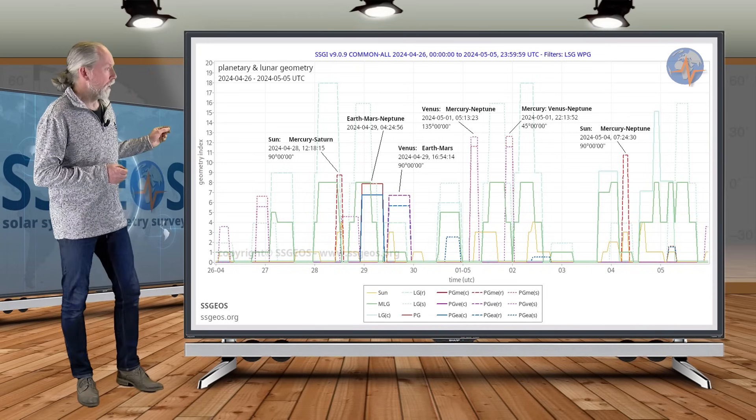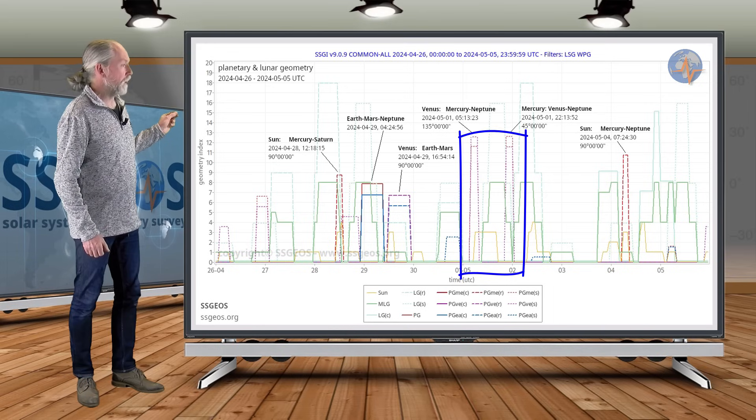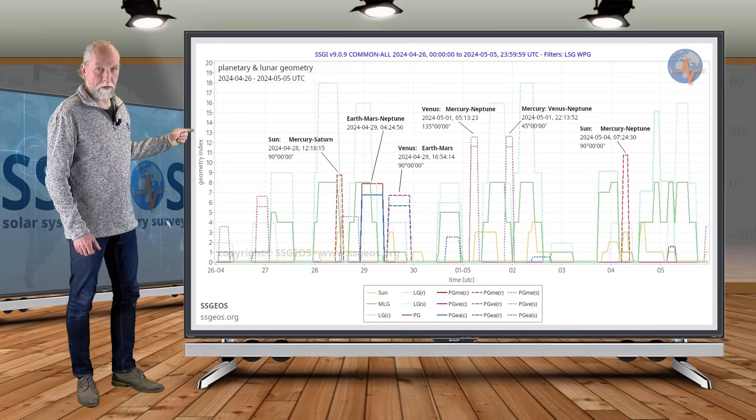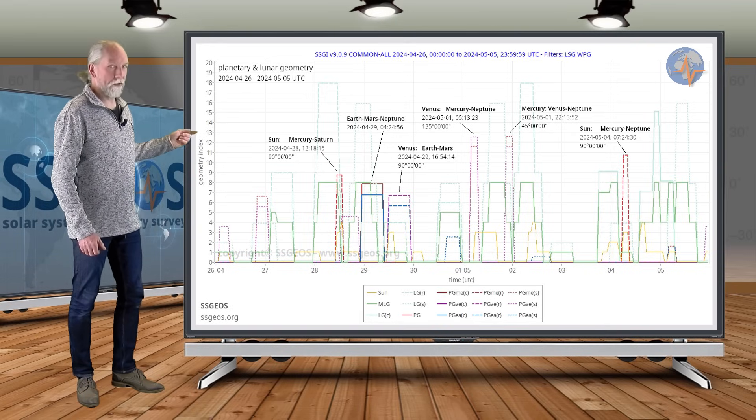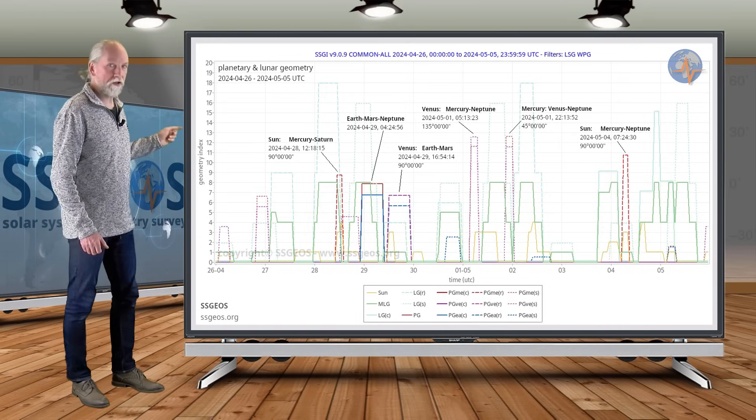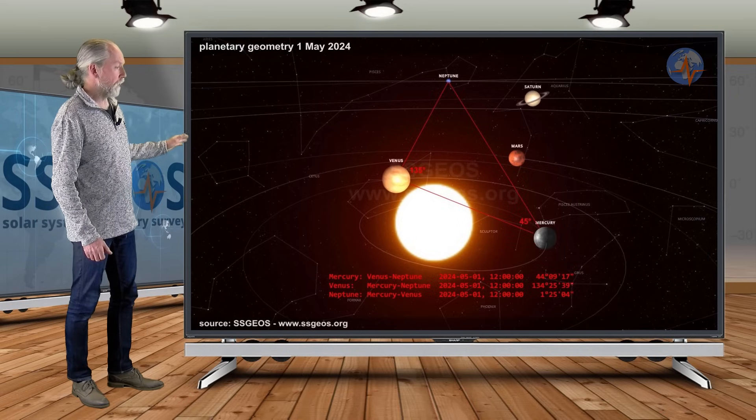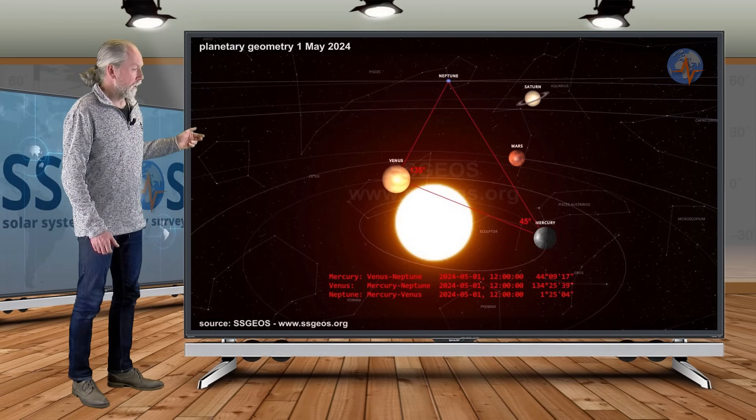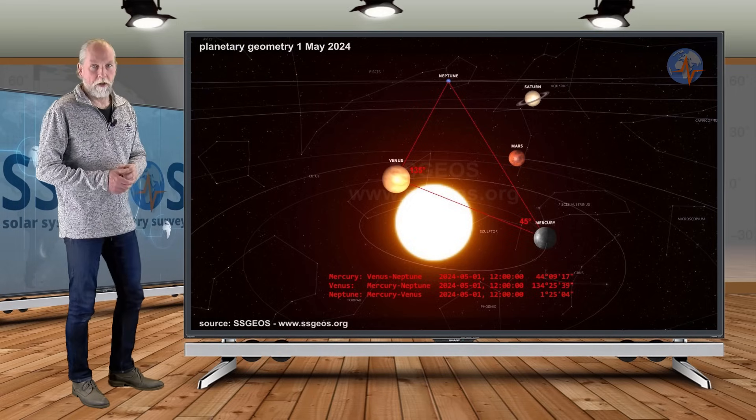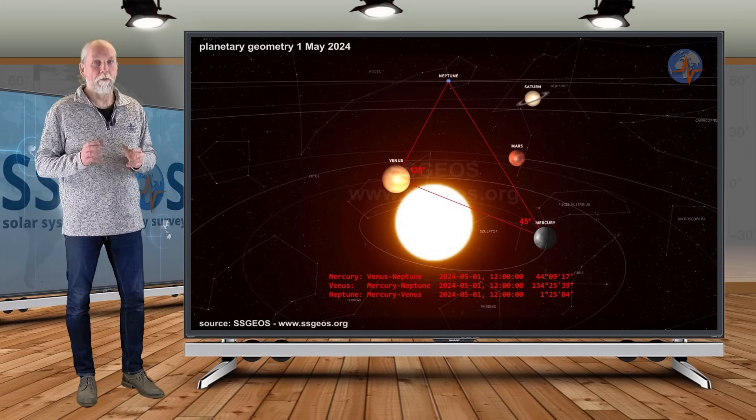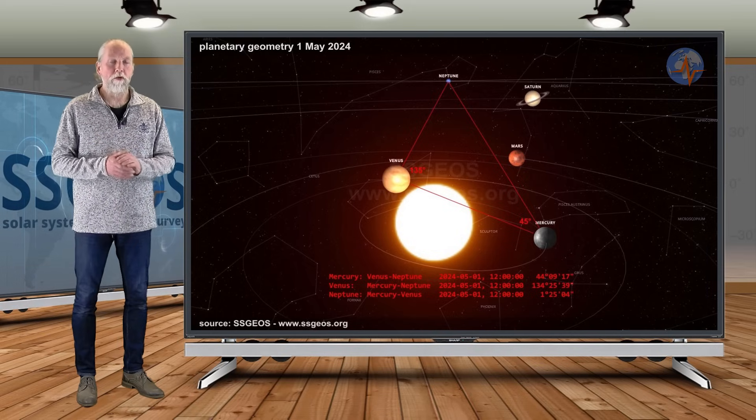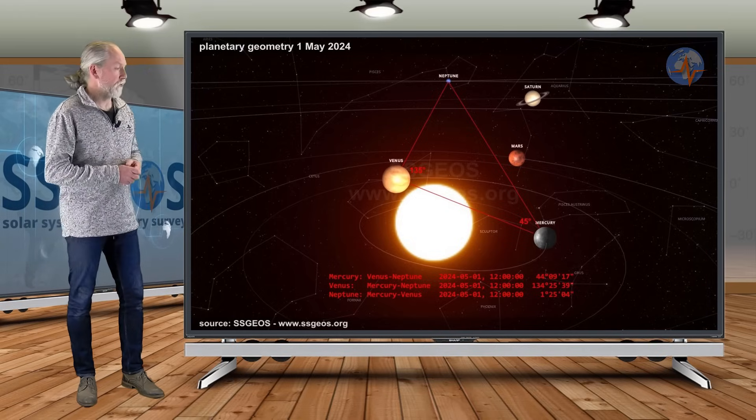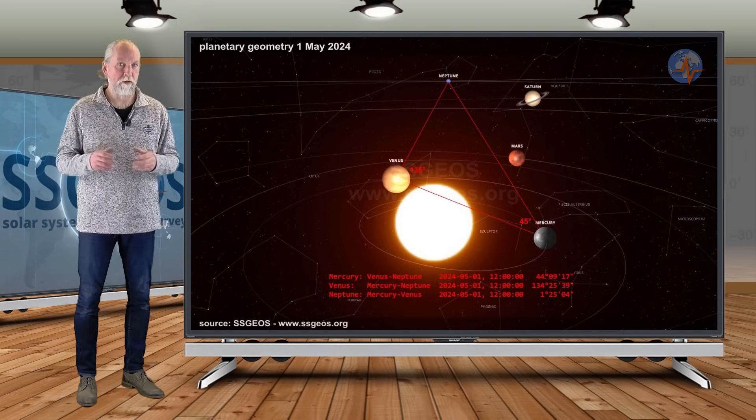Then we have a pair of semi-right angles involving Venus, Mercury and Neptune on the 1st of May. Let's have a look at the solar system how that geometry looks like. This is interesting geometry: Mercury 45 degrees with Venus and Neptune, and also Venus with 135 degrees with Mercury and Neptune. In a rare case this can result in a major earthquake. Usually we see a cluster of stronger earthquakes, some seismic response 5.6 and larger, but in a rare case this can result in a larger seismic event.